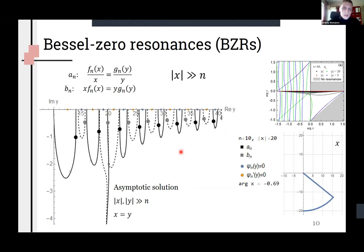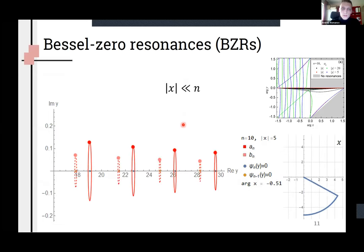On this animation you can see how exactly resonances are moving with changing arc x and also see one asymptotic solution for large x and y, x equals y equals 20, so-called known scattering case. Almost all observed in experiment resonances are Bessel-zero resonances because they are close to real axes of x and y.